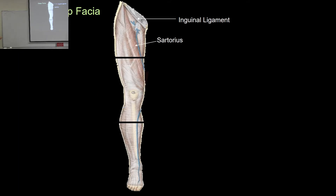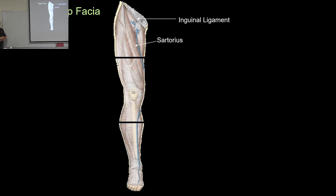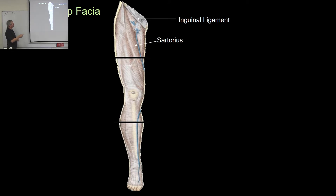We have the quadriceps on the anterior aspect of the thigh. They attach to the patella through the quadriceps tendon, and the patella attaches to the tibia through the patella ligament — it's called a ligament because it's bone to bone. Then we have sartorius, an interesting muscle that goes from the anterior superior iliac spine to the medial aspect of the tibia, running from lateral to medial, opposite to most other structures.